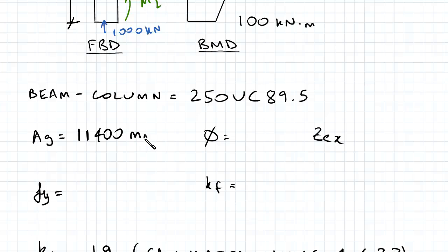So 11400 millimeters squared, phi equals 0.9, ZEX. Again, all these values are phi.